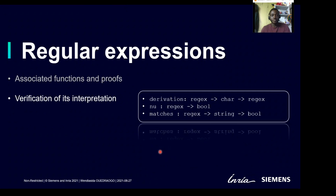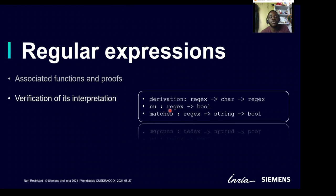In addition to that definition, we have the following functions: a derivation function that implements what transformation happens to the regular expression when it consumes a character; the nu function that returns true if and only if the regular expression accepts empty strings; and the match function that returns true if and only if the regular expression can match the given string. With those definitions, the author proved that the whole implementation satisfies the axioms of Kleene algebra.